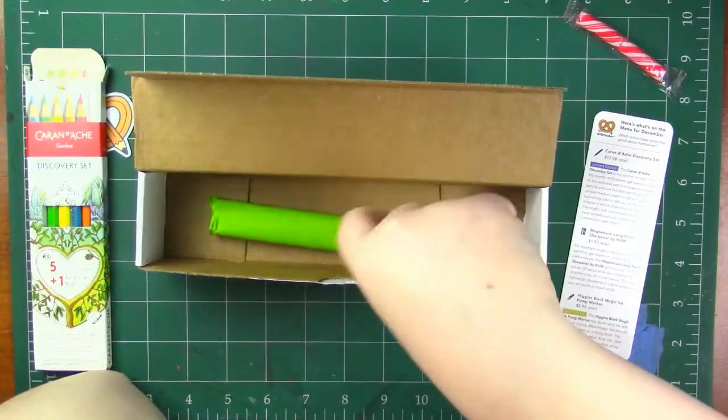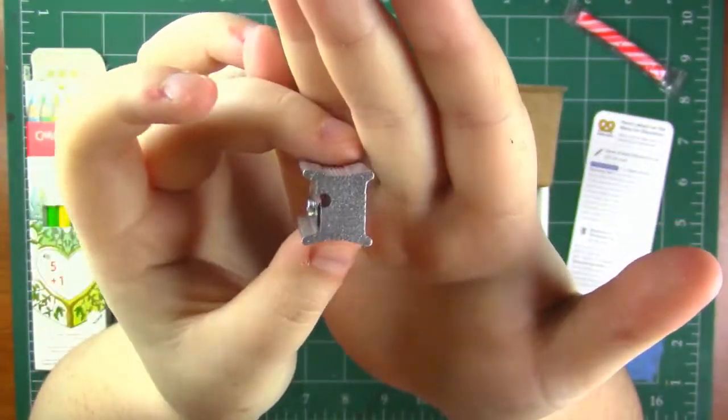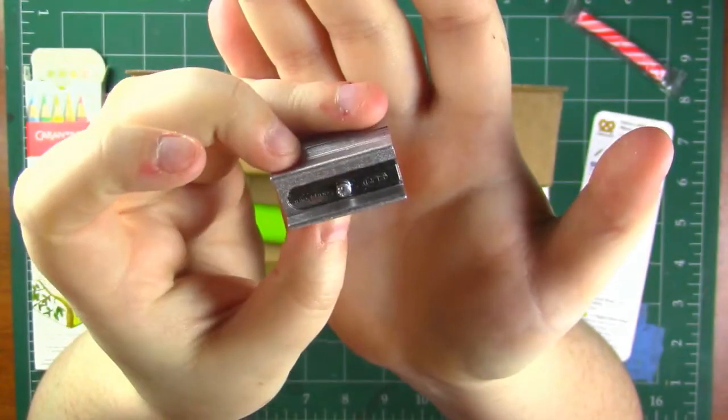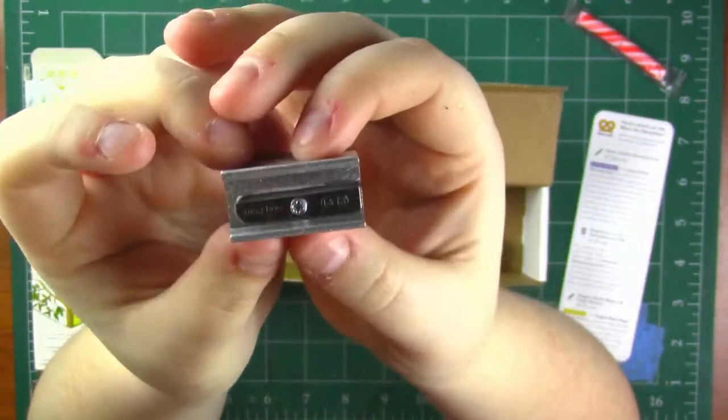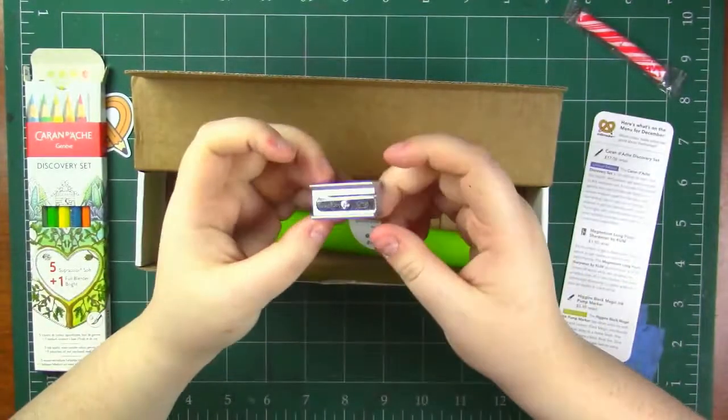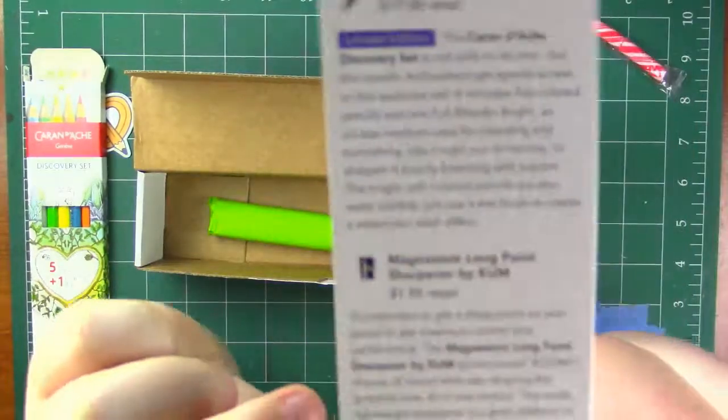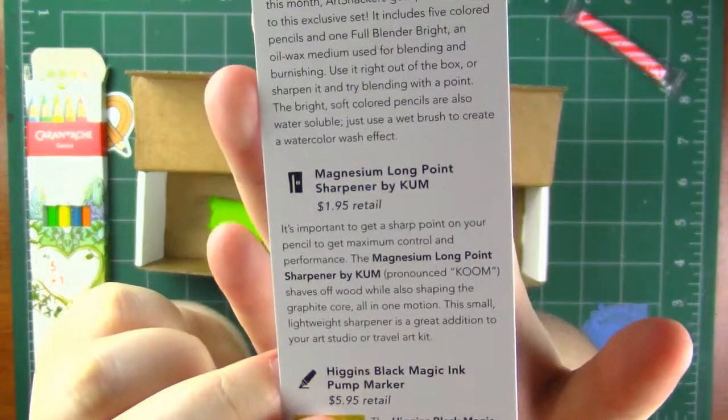So next up in this box it looks like we have got a sharpener. I have so many sharpeners. I do prefer the ones that have a casing so I don't have to try to hover this over and catch all the shavings.